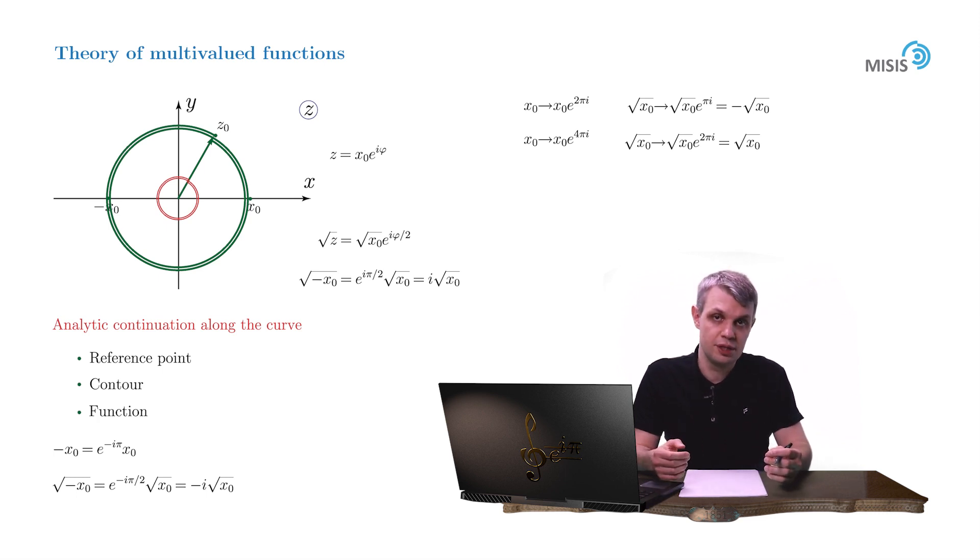Well, the solution proposed by Cauchy was crude but extremely effective. We just forbid full rotations. But how do we achieve this? Well, we modify the structure of the complex plane itself.